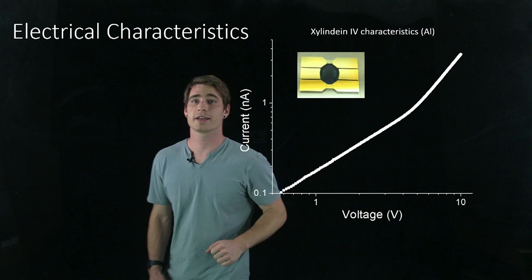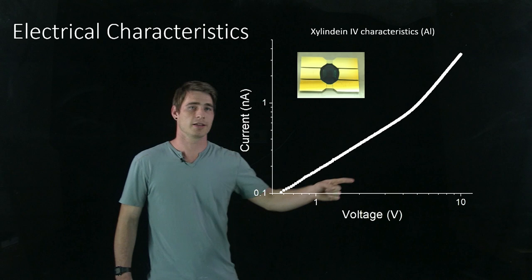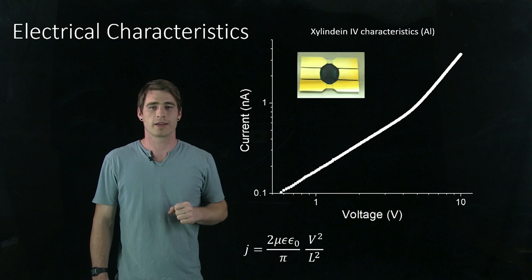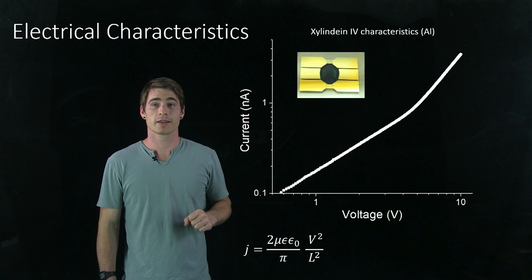We've also taken a look at the electrical characteristics by making films on sets of electrodes and measuring the current output with respect to the voltage. I've plotted this here on a log-log plot. And in this region here, we see that it switches to a quadratic behavior. And in this region, we can fit the current characteristics to this equation that you see here.